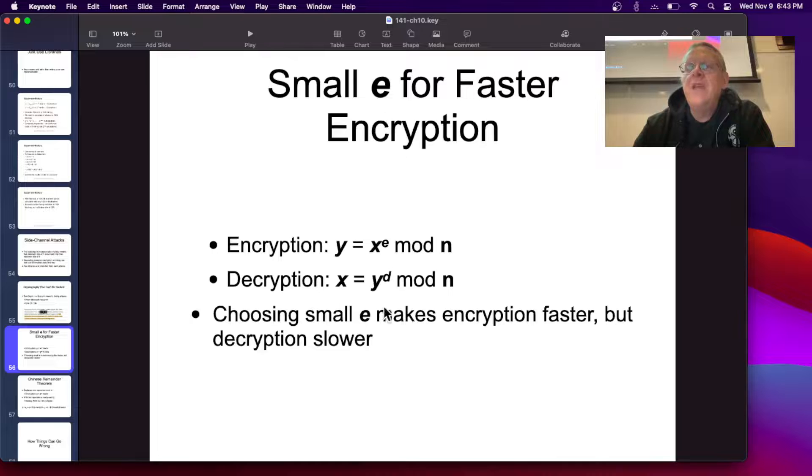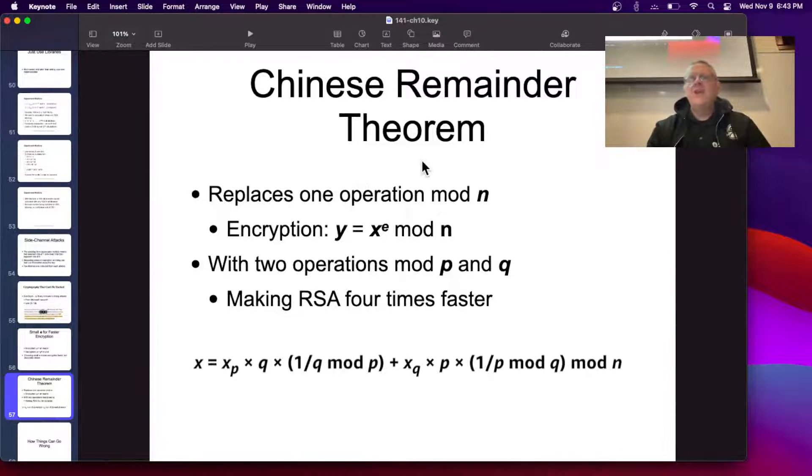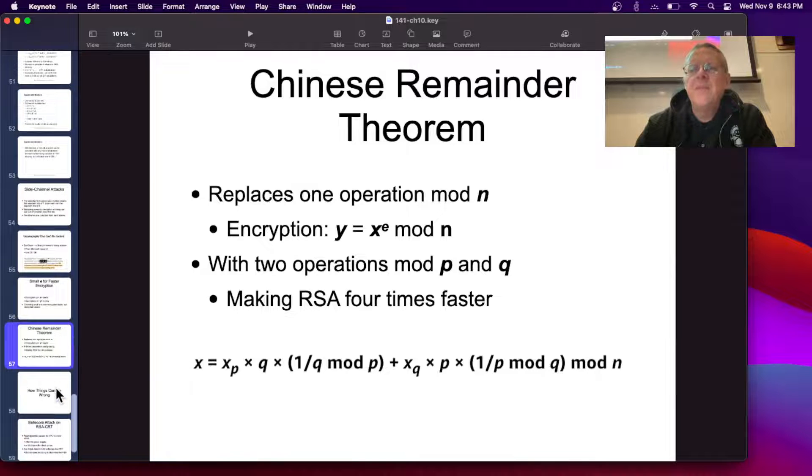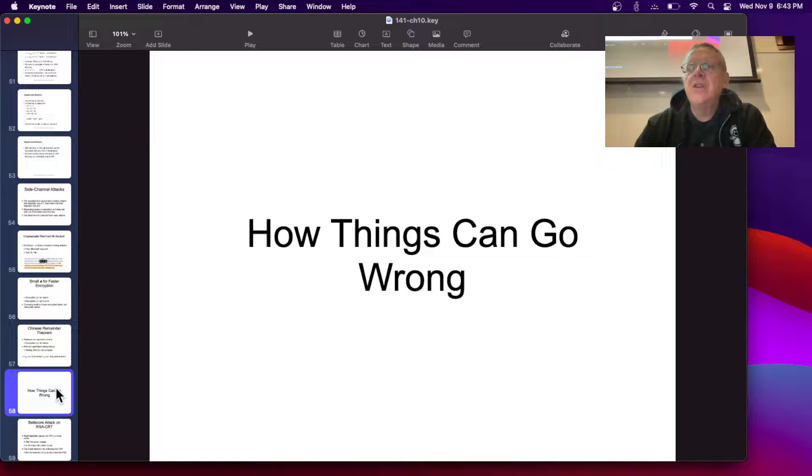Anyway, I mentioned before, if you make e small, then the encryption will be fast because you're raising it to a small power, and decryption will be slow because if you make e small, d generally gets larger. So, the Chinese remainder theorem, by the way, makes it four times faster. There is a way to, instead of doing one operation mod n, you take the fact that n is the product of p and q and this strange construction can be done to end up working with smaller numbers and make it faster. Just a way to make the calculation a little bit faster.